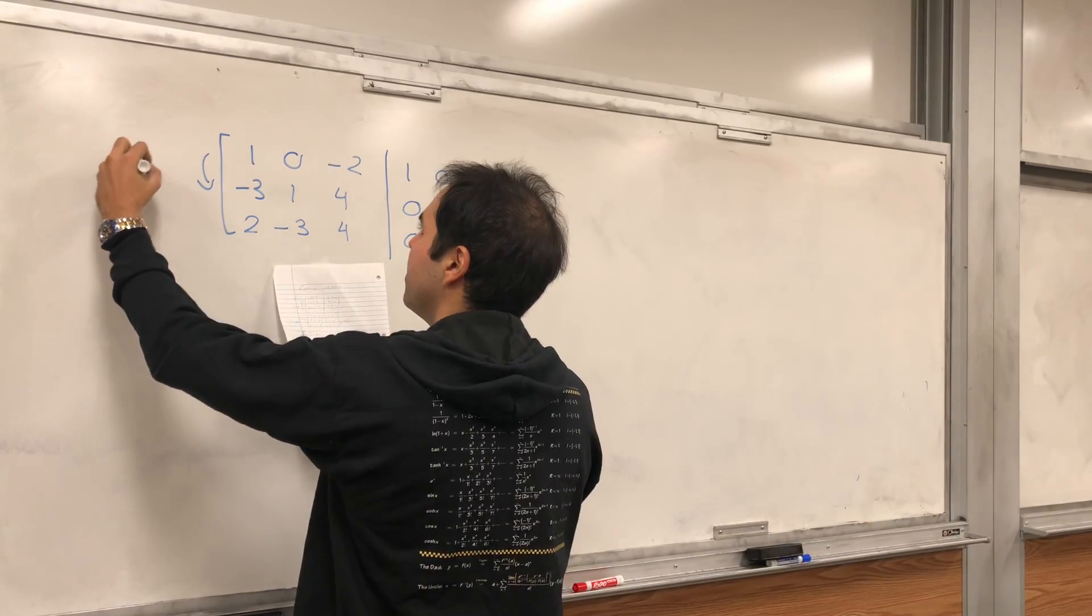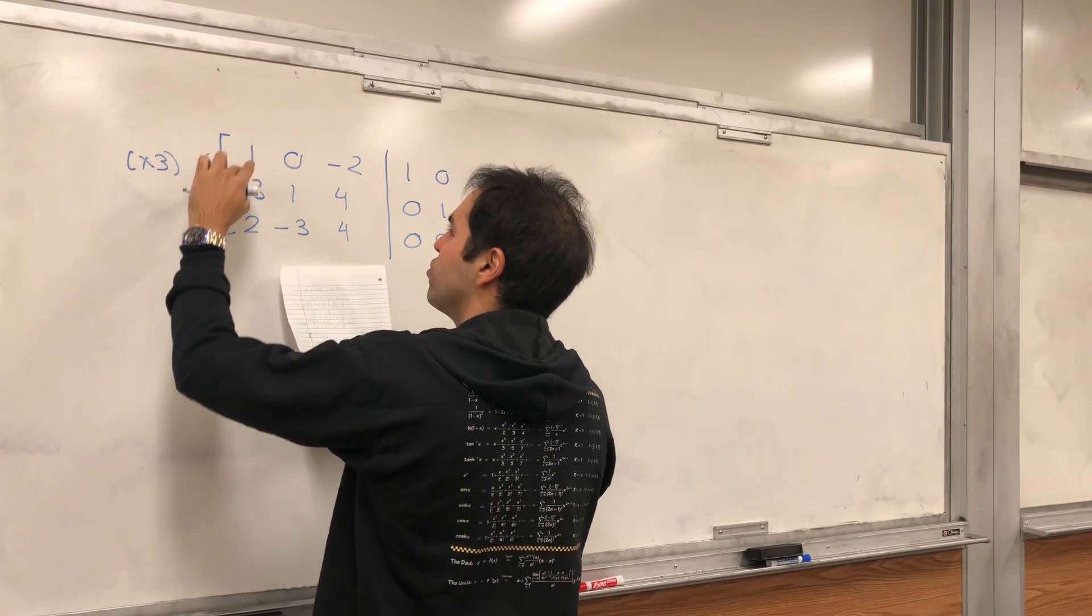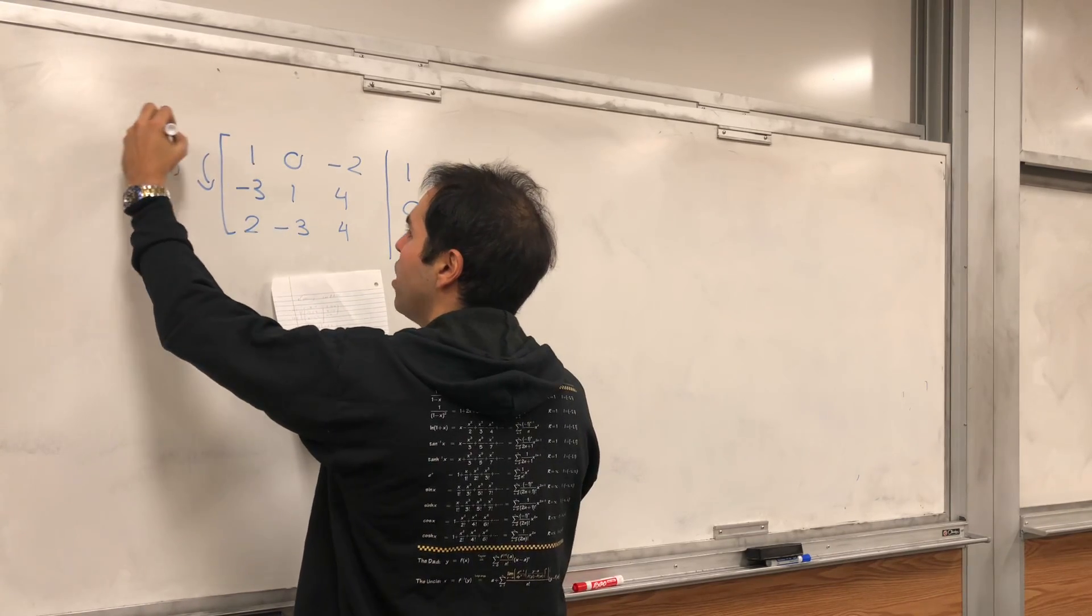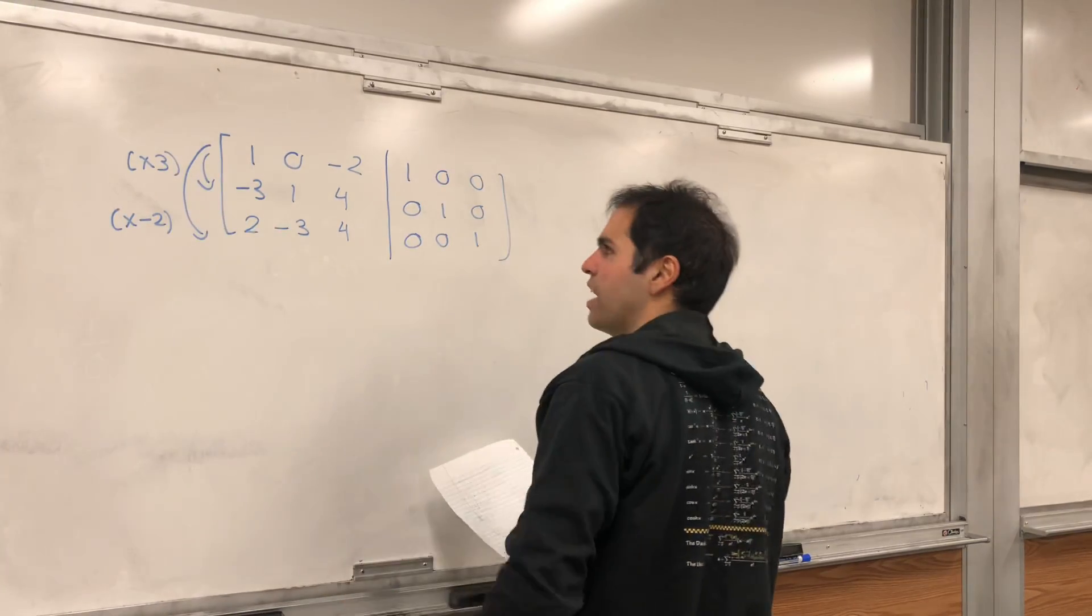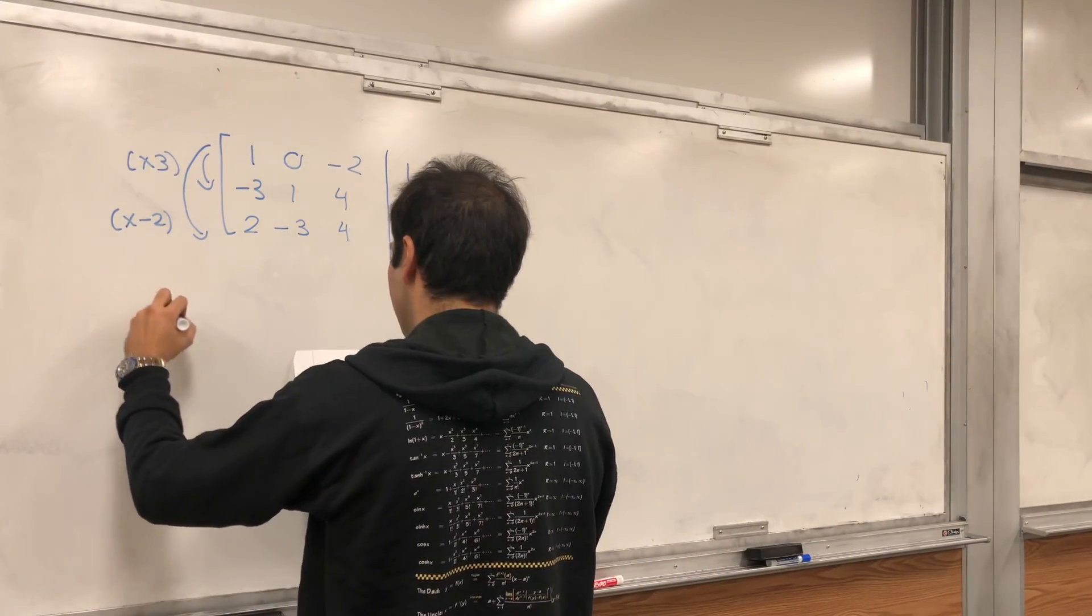So for example, we can multiply the first row by 3 and add it to the second row, and simultaneously subtract 2 times the first row from the third row,